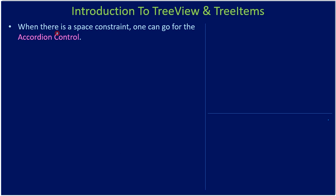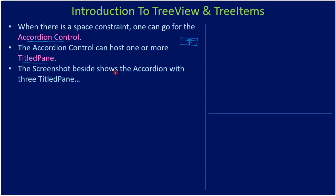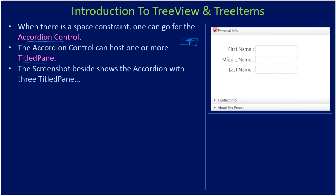When you are designing the UI and there is a space constraint, you can go for the Accordion control. The Accordion control can host one or more TitledPanes. A TitledPane is a pane with a title at the top, and using this title you can expand or collapse the pane. The screenshot shown here shows an Accordion with three TitledPanes.